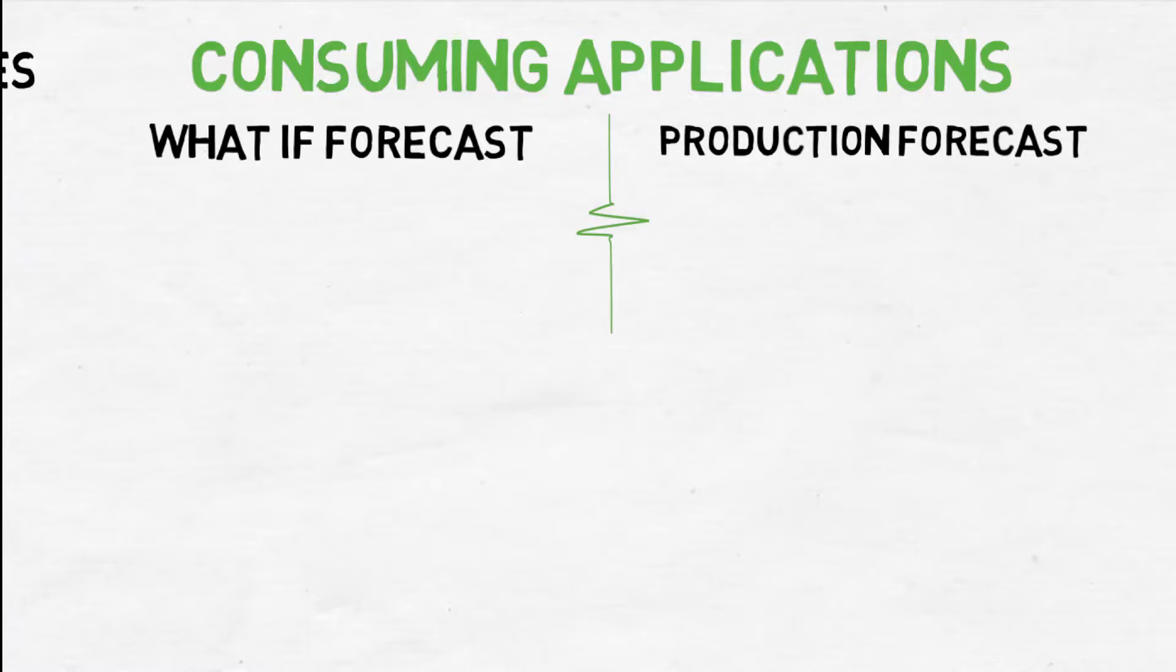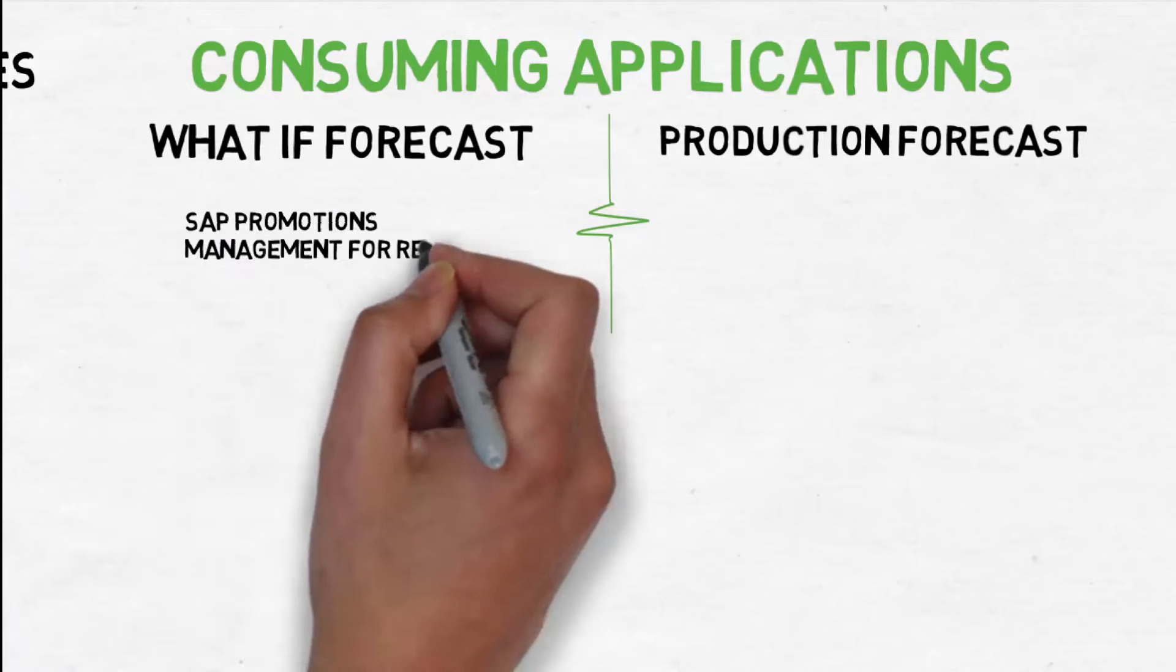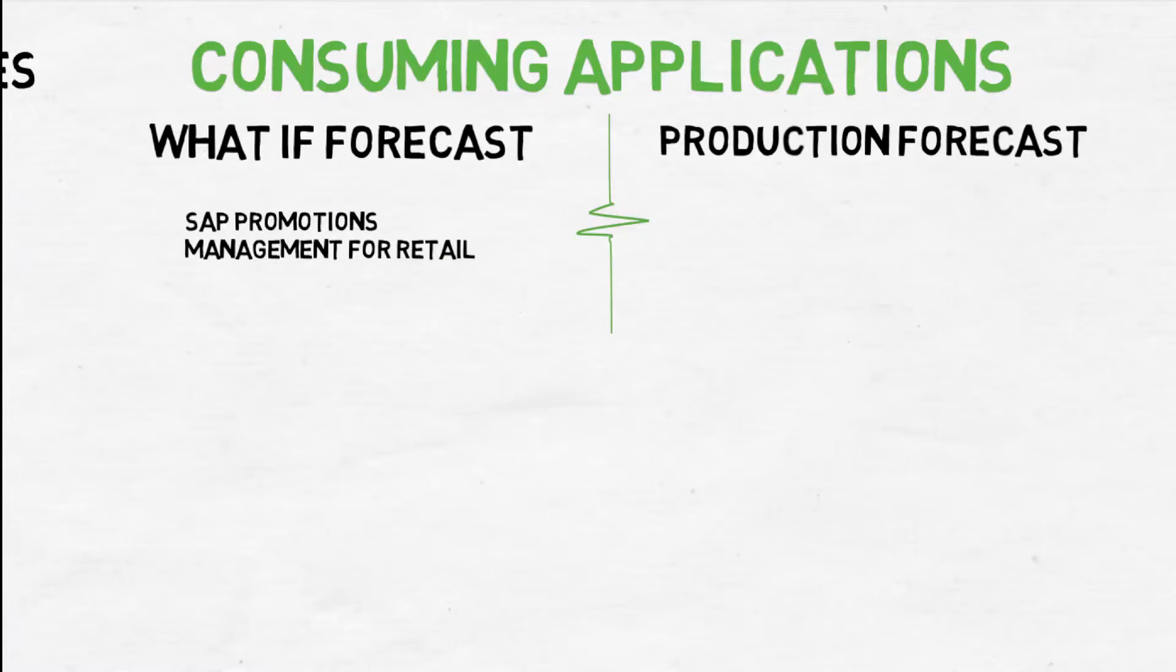PMR Promotions Management uses the what if forecast. As I mentioned earlier, I can create a promotion in PMR for 10% off all products of a certain category for the next two weeks within a certain region, and then you press a button to ask for a system forecast. It goes down to UDF to fetch a response, which says, hey, I expect your sales lift to be this many units. Simply speaking, of course.